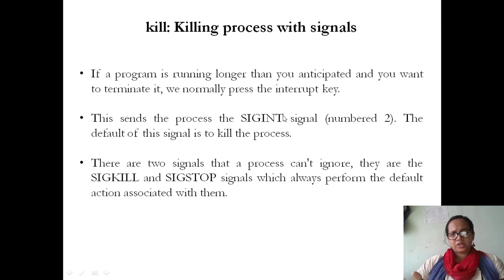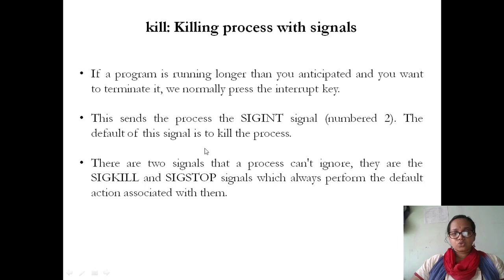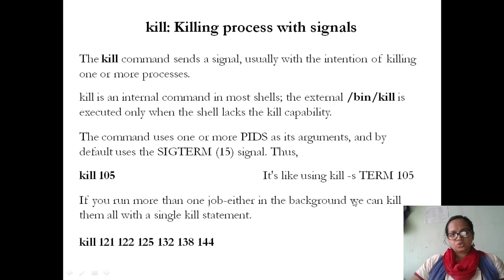If a program is running too long and you want to terminate it, you normally terminate it with the interrupt key, which sends the signal SIGINT — interrupt signal number 2. The default action of the signal is to kill the process. A process may also ignore a signal or execute user-defined code to handle it. There are two signals that a process cannot ignore: SIGKILL and SIGSTOP, which always perform their default actions.